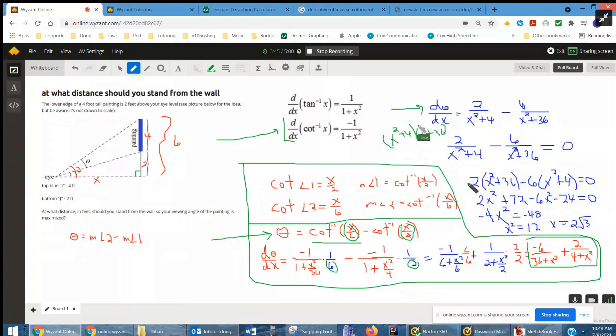And when you multiply through, eliminating the fractions, this is what you get. You get x equals 2 radical 3. Okay, so that's how far the distance this person should stand from the wall to maximize the viewing angle of the painting.